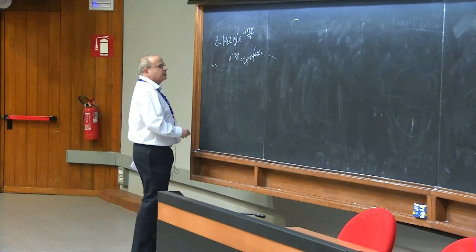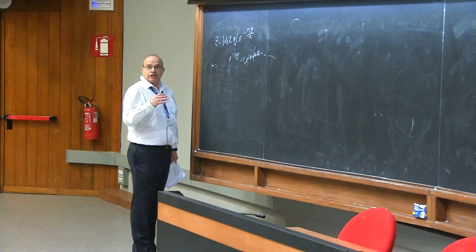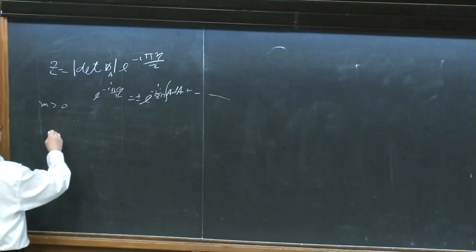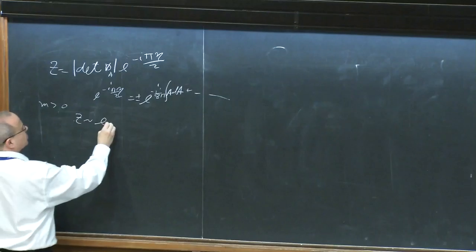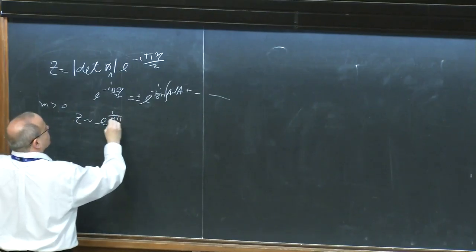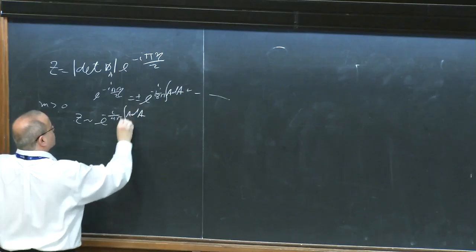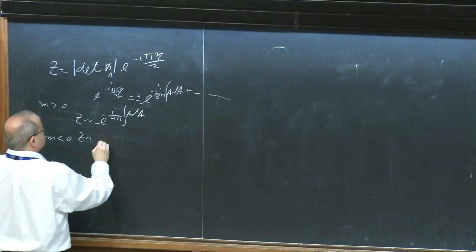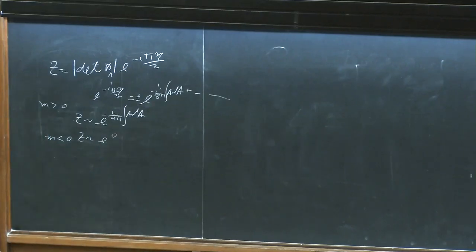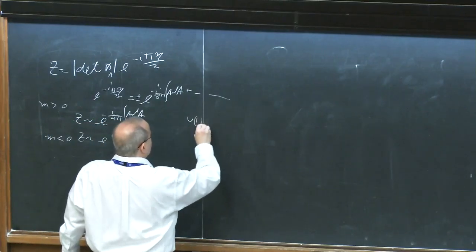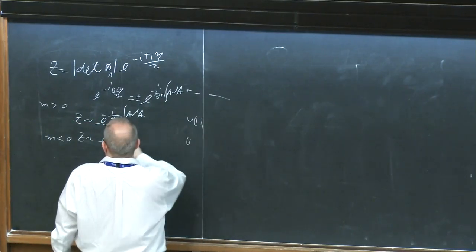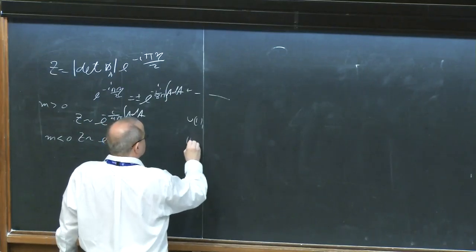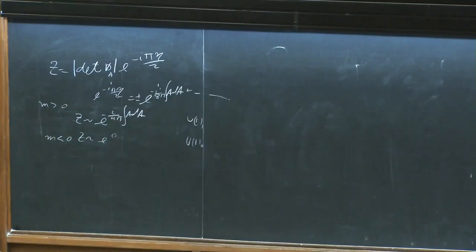When we turn on masses, the more naive presentation that people often use actually gives the right answer. For positive mass, Z has a phase which is e to the i over 4 pi, minus 4 pi A dA with an integral. And for M negative, Z has phase zero. So for positive mass we are left with U1 level 1, and for negative mass we have U1 level 0. This highlights the fact that parity or time reversal is broken: for one sign of the mass we get level 1, for the other sign we get level 0, although this is not a dynamical field.